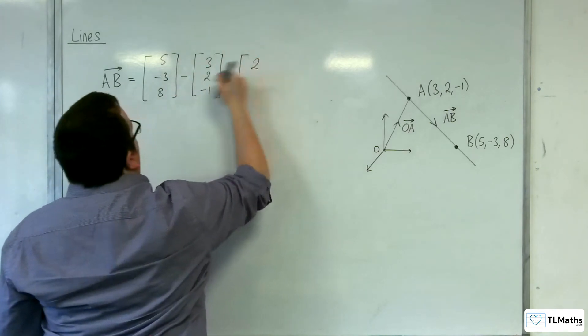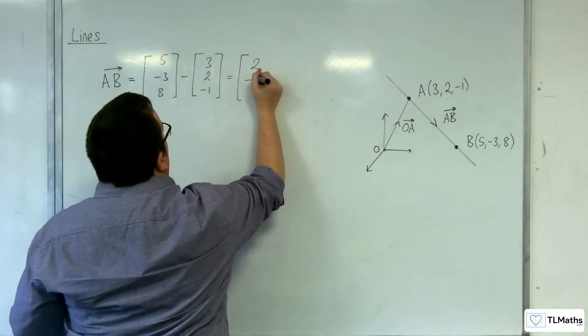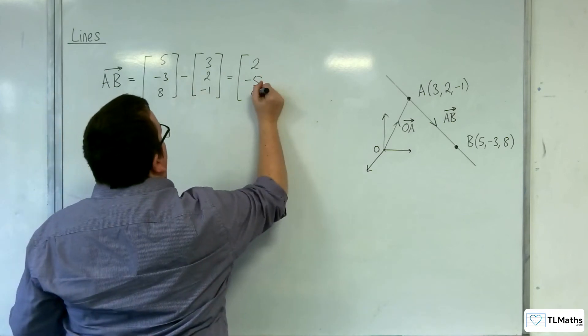5 take away 3 is 2. Minus 3 take away 2 is minus 5. 8 take away minus 1 is 9.